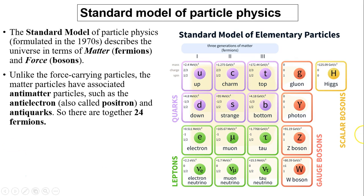So the standard model of particle physics describes the universe in terms of matter and force. Unlike the force-carrying particles, the matter particles have associated anti-matter particles, such as anti-electrons and anti-quarks. So there are 24 fermions. So fermions, these are matter particles, right over here.